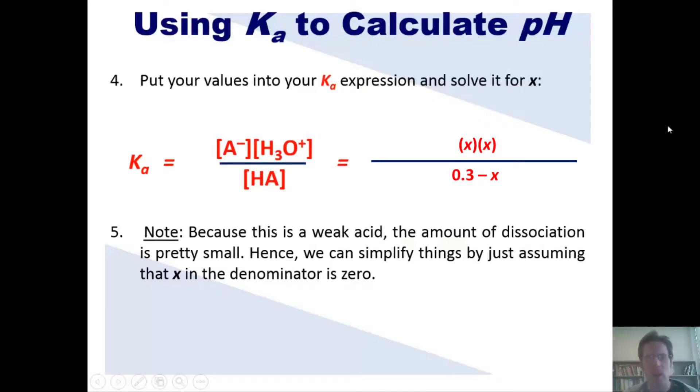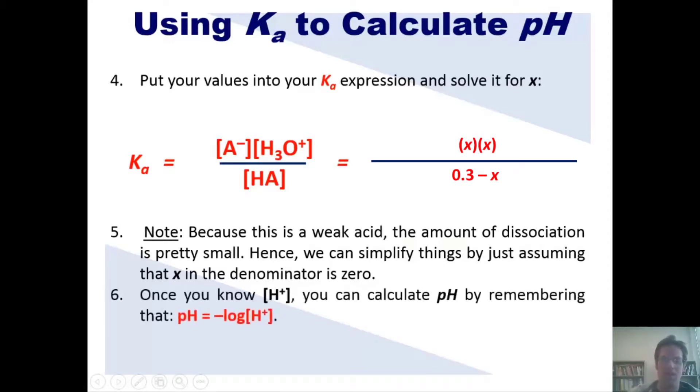So what's the whole point of all of this? The point is to get the concentration of H3O-plus. Now, as I've mentioned elsewhere, H3O-plus and H-plus, they're kind of used interchangeably in aqueous solutions. So really what X represents is the concentration of H3O-plus or H-plus. Now, once you have that, you can calculate pH by remembering that pH is equal to the negative log of the concentration of H-plus or H3O-plus. That's pretty much it. Got it?